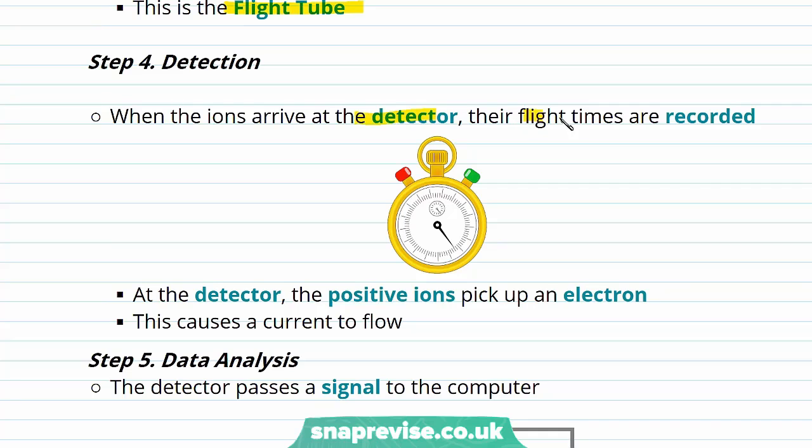And when they arrive at the detector, their time of flight is recorded. At the detector, the positive ions pick up an electron and in doing so they cause a current to flow.